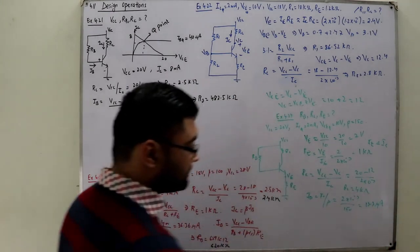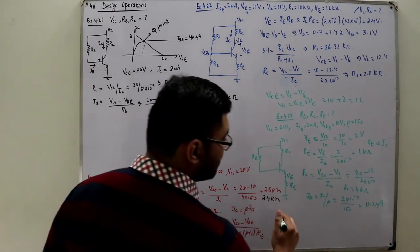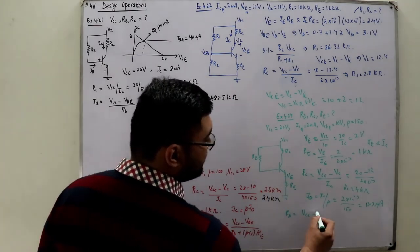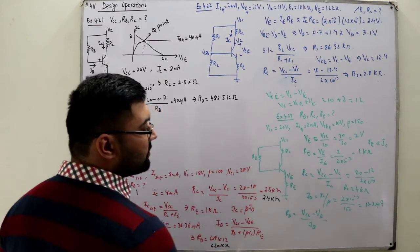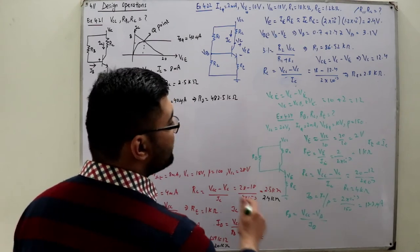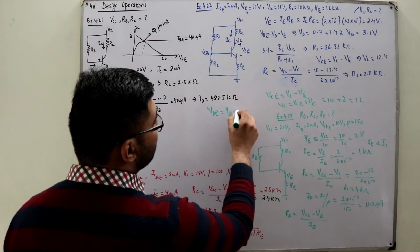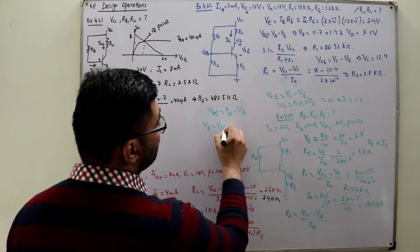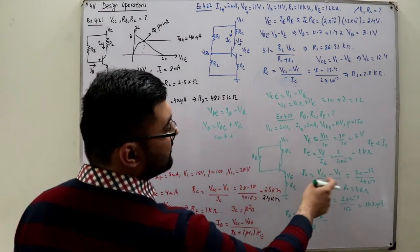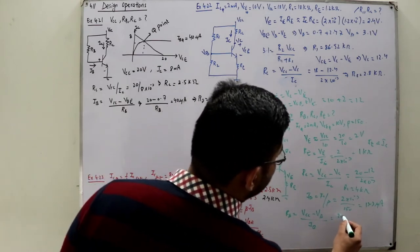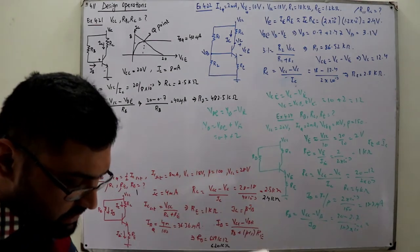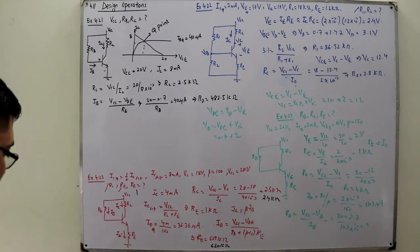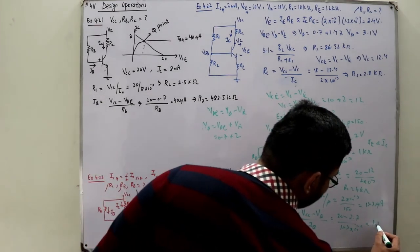For RB: VBE equals VB minus VE, so VB equals VBE plus VE equals 0.7 plus 2 equals 2.7 volts. RB equals VCC minus VB divided by IB — that is 20 minus 2.7 divided by 13.3 microamperes — RB comes out to be 1.3 mega ohms. That should be it for this example.